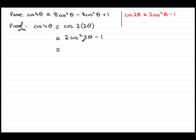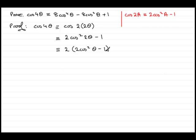Then I can use this identity again, only this time a is theta. We should know that cosine of 2 theta is 2 cos squared theta minus 1. But this time we've got cos 2 theta all squared, so we need to square it — and then we've got that minus 1 on the end.